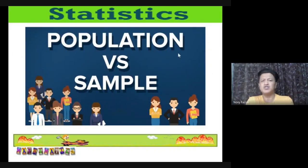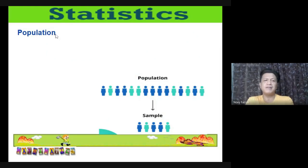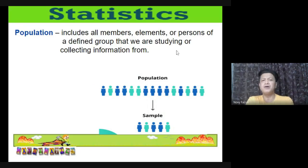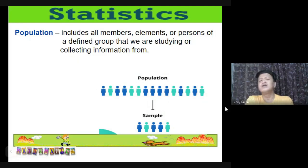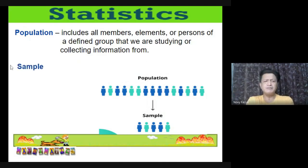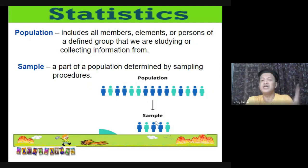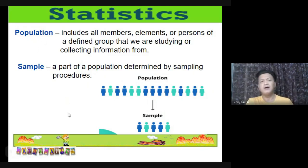In statistics, we also have the concepts of population and sample. Population includes all members, elements, or persons of a defined group being studied — the total members. Sample is simply a part of a population determined by sampling procedures — a sub-part taken from the population. Don't confuse the two: population is the total members being studied; sample is part of the population being studied.